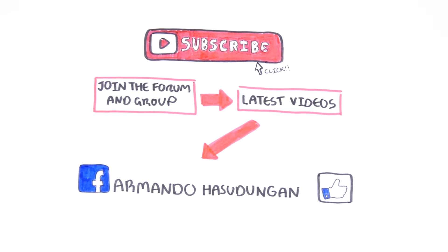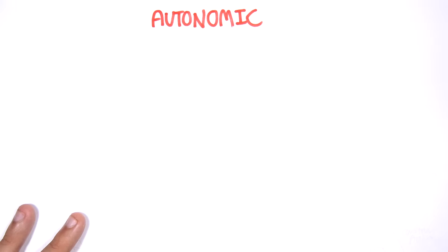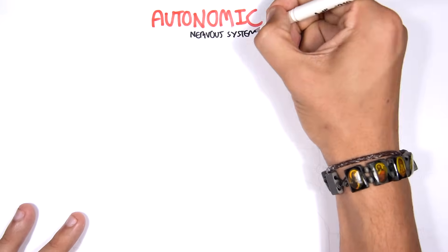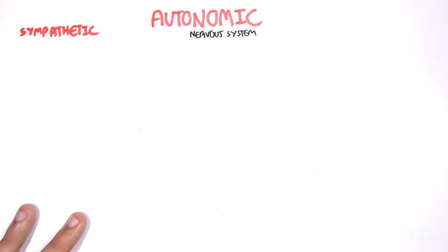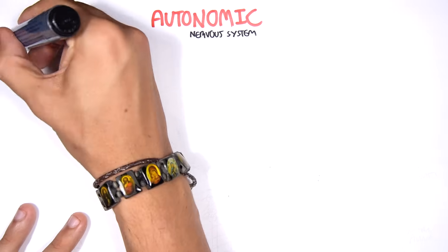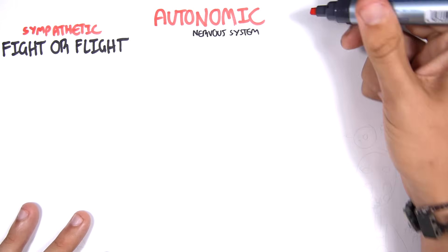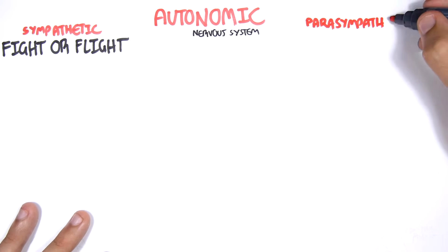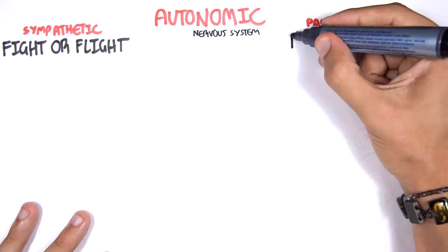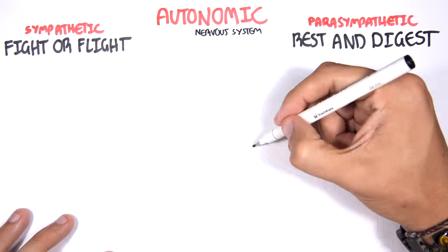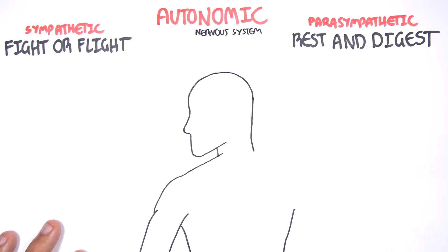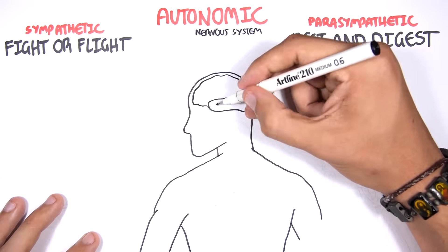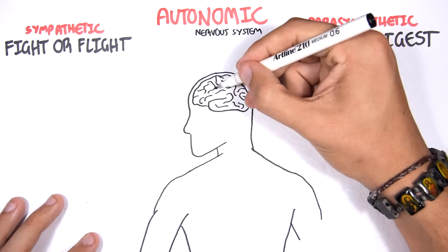In this video, we're going to look at the autonomic nervous system. It can be divided into the sympathetic nervous system, also known as the fight-or-flight response, and the parasympathetic nervous system, also known as the rest and digest response. The autonomic nervous system is involuntary control of body tissues. It arises from the central nervous system, which is our brain and spinal cord. Here I am drawing the brain and the spinal cord.